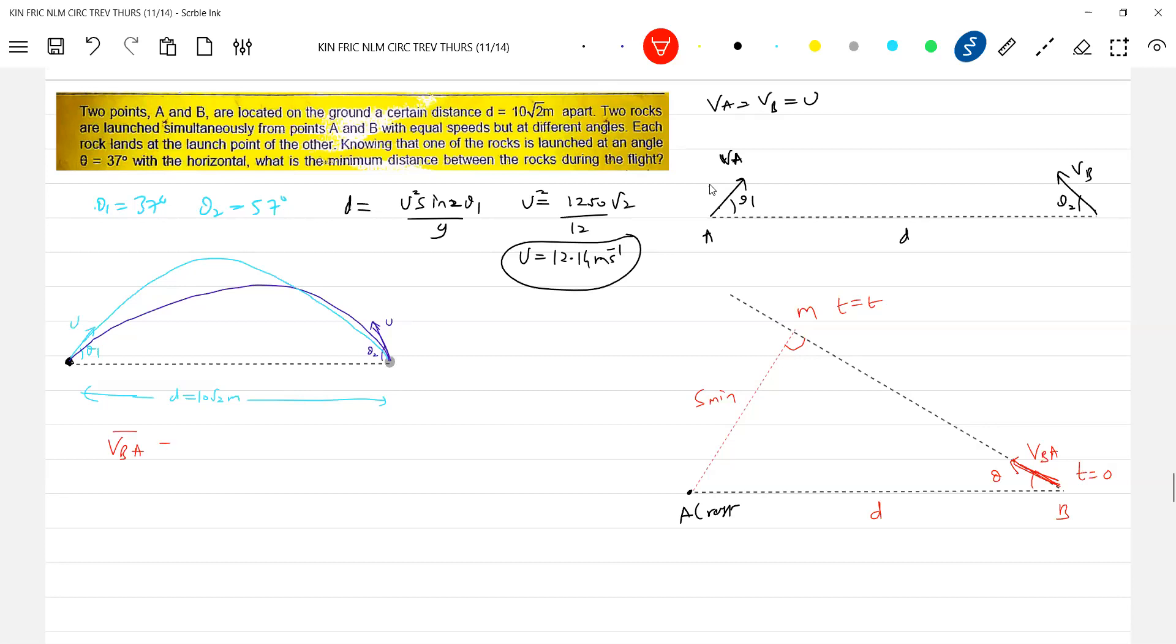And we can also calculate the time taken at T equals zero, at what time the separation between them will be minimum. So for that we'll go for VBA equal to VB bar minus VA bar.